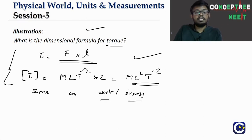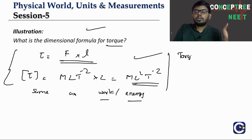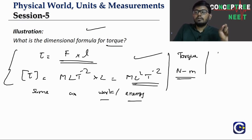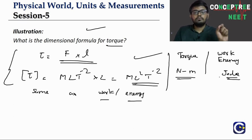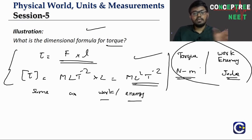Torque and work/energy have the same dimensional formula M L² T⁻², but they are different physical quantities. To show the difference in their units, for torque we keep the unit as newton·meter (N·m), while for work or energy we call it joule (J). This way we distinguish between the two.